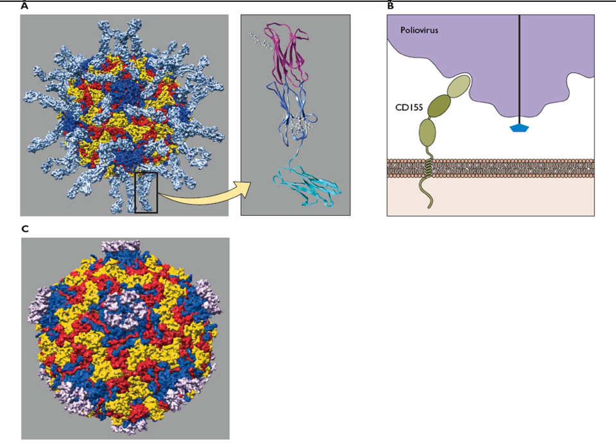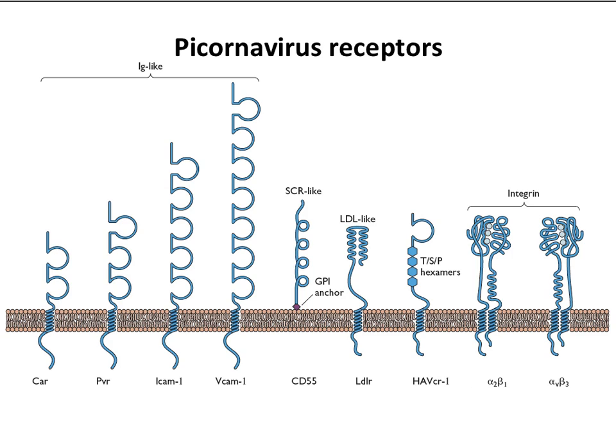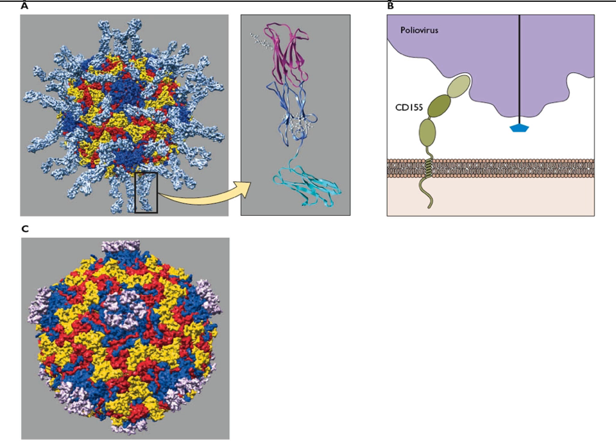The soluble receptor was mixed with virus so each receptor molecule is binding the virus, and then the structure was solved by cryo-electron microscopy and image reconstruction. It's a low-resolution structure, but you can see very clearly individual receptor molecules binding to the capsid. What's really interesting is that around each five-fold axis of symmetry there are one, two, three, four, five receptor molecules — that's what five-fold means. You would predict 60 copies of the receptor bound because of icosahedral symmetry, and that's in fact what you get.